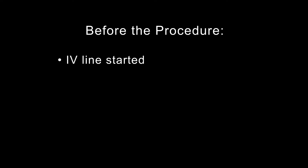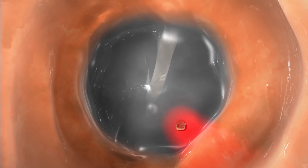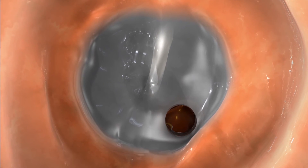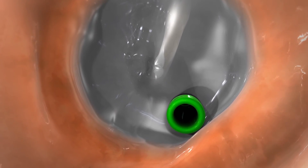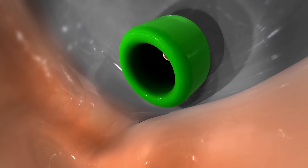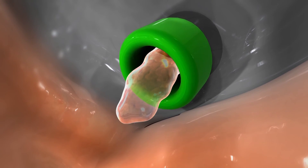Before the procedure, an intravenous line will be started. In most cases, general anaesthesia is used to put the patient to sleep for the duration of the procedure. The surgeon will make a small incision in the eardrum using a scalpel or laser and drain the fluid in the middle ear. In many cases, the surgeon will place a ventilation tube or PE tube through the incision. This small tube will drain any fluid that collects after surgery and allow air into the middle ear to help dry it out.